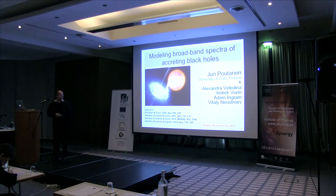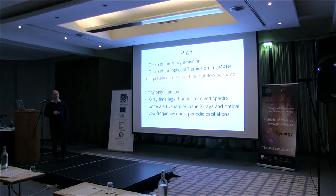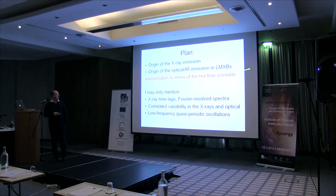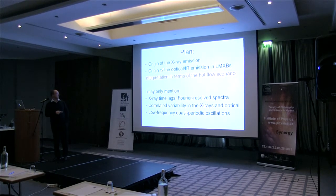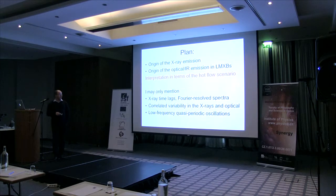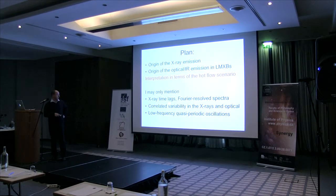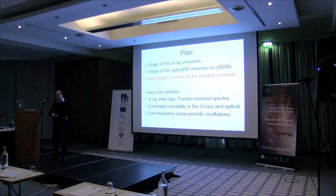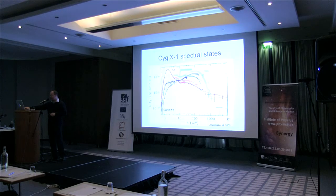This talk is based on a few papers we have published recently. The plan is: first I will review some old spectral decomposition of how to understand X-ray and gamma-ray emission in galactic black holes. I will talk about optical and infrared emission from low-mass X-ray binaries containing black holes, and I will interpret most of what we see in terms of the hot flow model. I will also mention timing information like time lags, Fourier resolved spectra, correlated variability between X-rays and optical/infrared, and quasi-periodic oscillations.